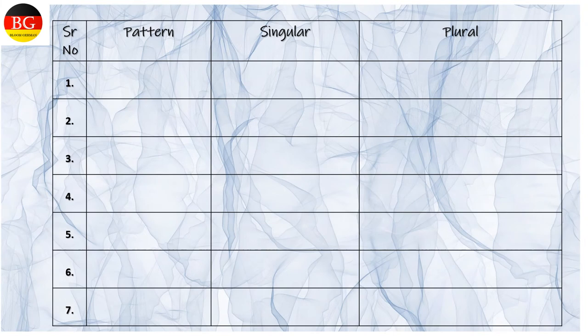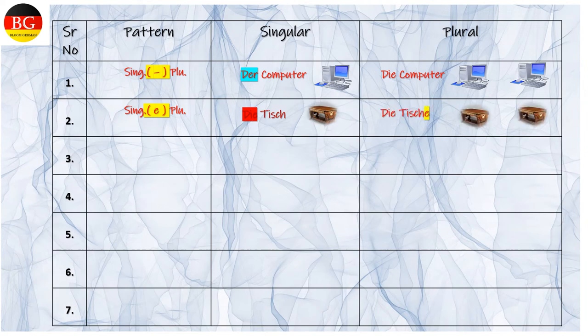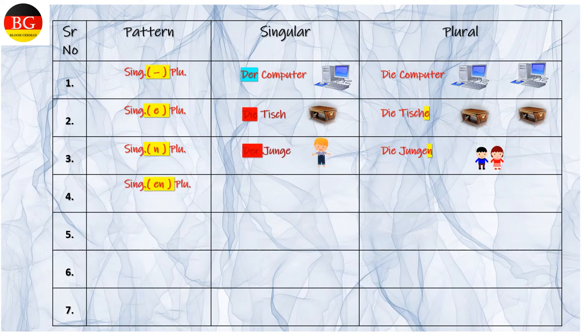In glance: Pattern 1 with no ending. Zum Beispiel: der Computer, die Computer. Ending E. Zum Beispiel: der Tisch, die Tische. Ending N. Zum Beispiel: der Junge, die Jungen.